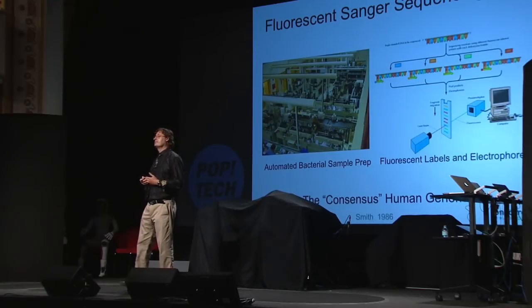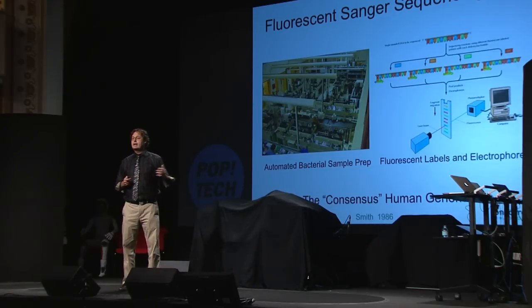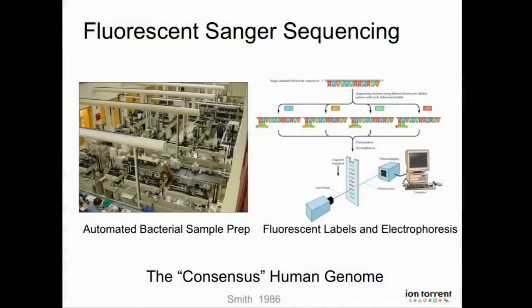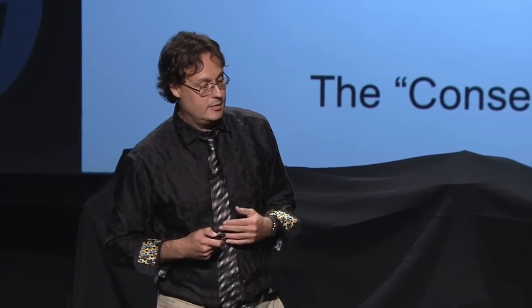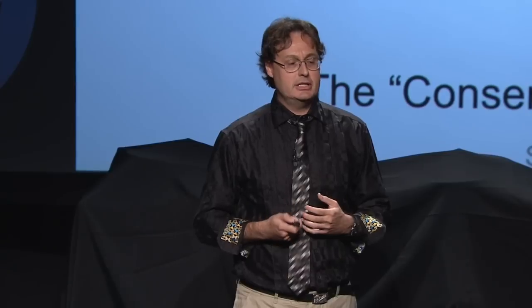A decade later, some scientists at Caltech automated it. Automating it allowed us to go from reading 5,000 letters to reading a few billion letters — the few billion letters in the human genome. But we didn't read an individual. This was an effort that took 10 years and cost 3 billion dollars. A public effort mixed up 50 people to make a map of what's common; a private effort used about six people. Both cost billions of dollars, so they gave us a map but didn't really help us as individuals.